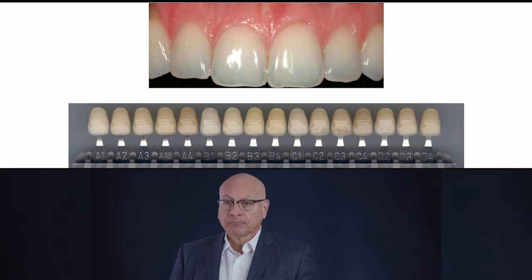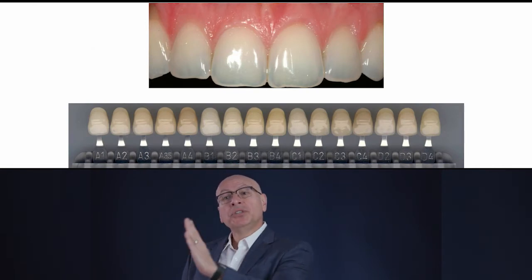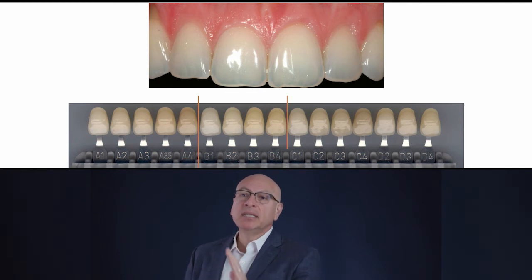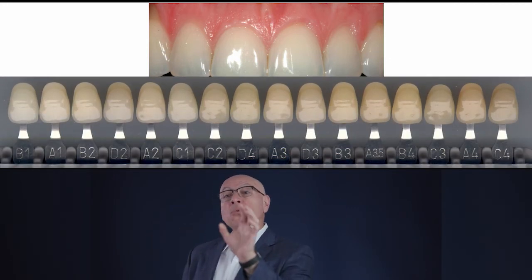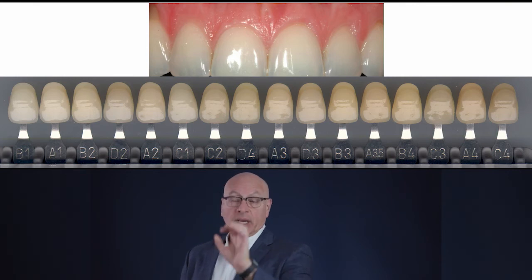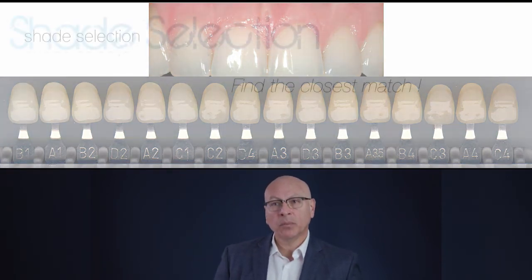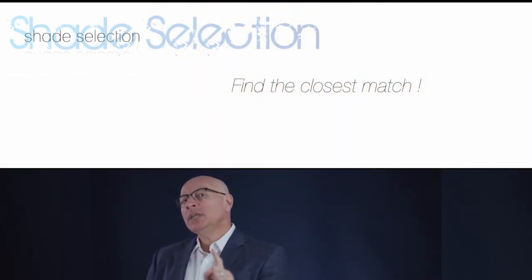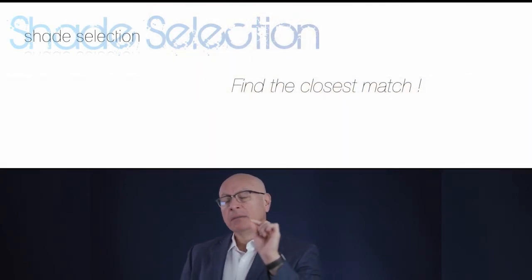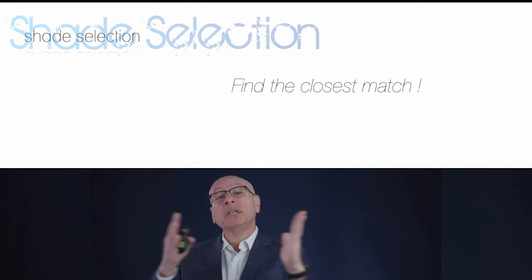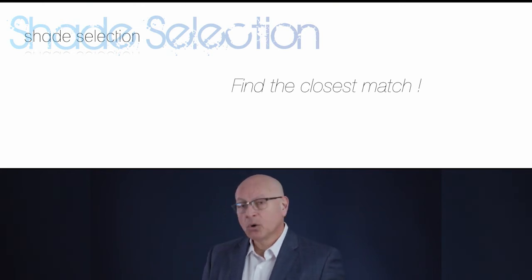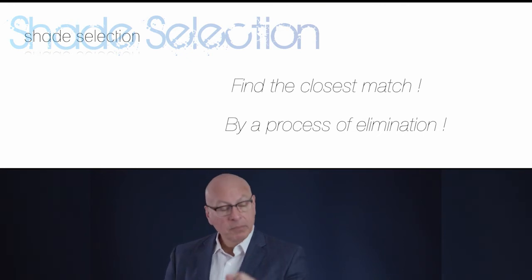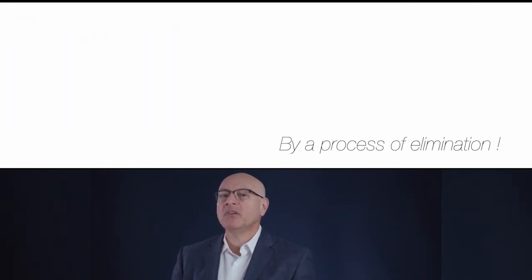Also, arrange your shade guide not by A, B, C, and D groups — arrange the shades from light to dark. That's the best way to select a shade. So let me take you through the process of selecting a shade. We're going to do this by finding the closest match, because the human shade of teeth is infinite and we only have 16 colors in the VitaPan shade guide. So we're going to do this by a process of elimination, because trying to find a perfect match is going to be very, very difficult.